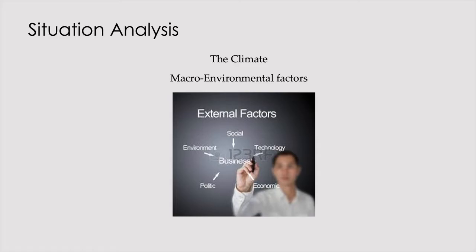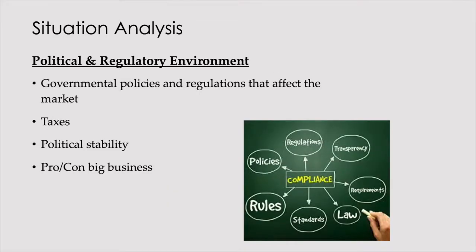Now the climate — those were the close micro environment players. This is the macro environment. Government: does politics change? Absolutely. The regulations that affect the market, taxes, political stability. Our nation, as wild as it is, is still pretty stable. Is the political climate pro or con big business? It's been pro big business since Reagan in the 1980s. I wish it were more pro small business so people like ourselves could open up a business without getting taxed hardcore.